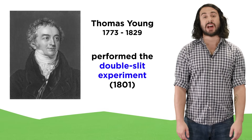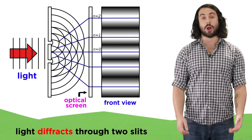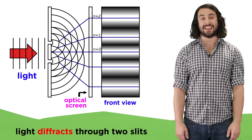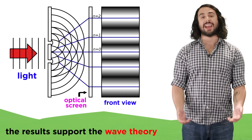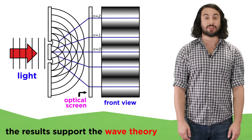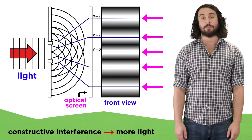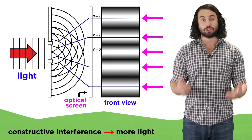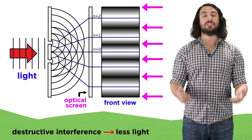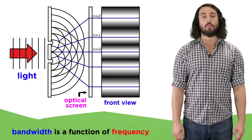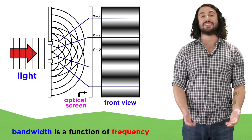In 1801, Thomas Young performed experiments where light was passed through a plane with two slits in it, striking a screen beyond. The diffraction and interference patterns that resulted clearly supported the wave model of light, with the brighter bands representing constructive interference and the darker bands representing destructive interference, with the width of the bands being a function of the frequency of the light.